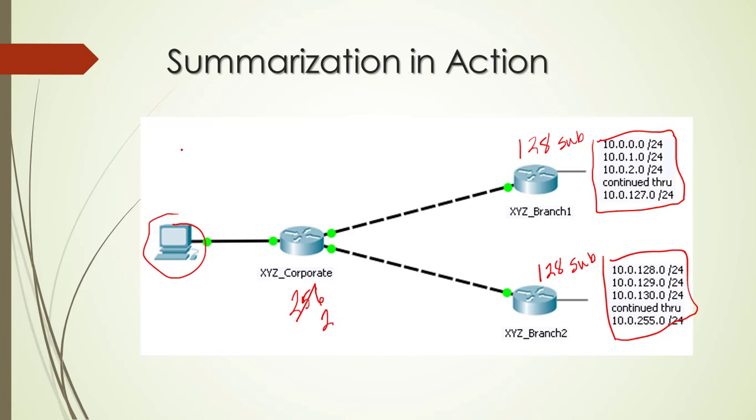So we could summarize the first range of addresses as 10.0.0.0/17 and that would cover us on this third octet from 0 through 127. And then we could put a second summarize statement in for 10.0.128.0/17 and that would cover us from 128 through 255.